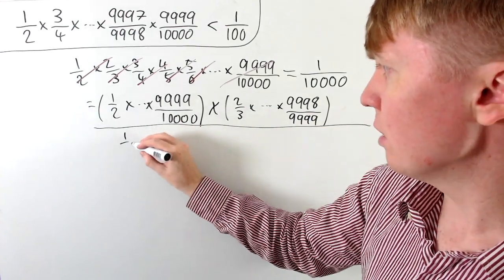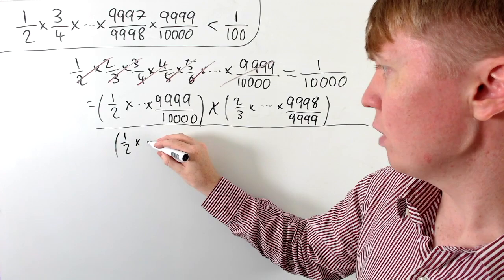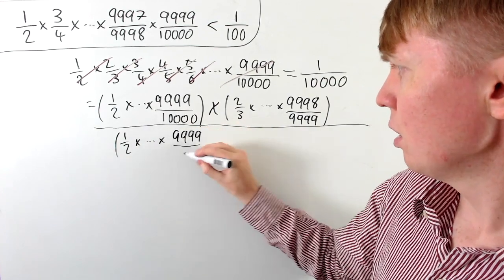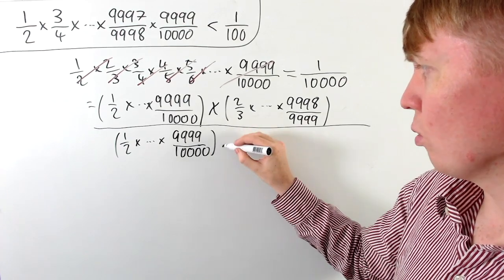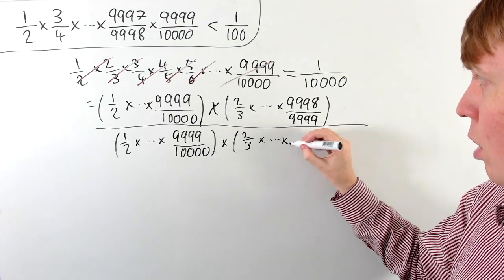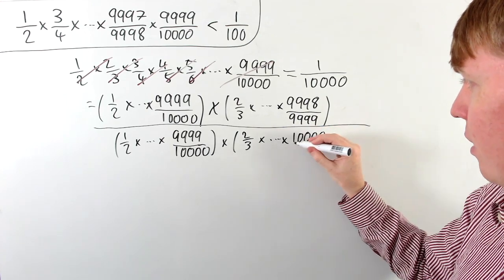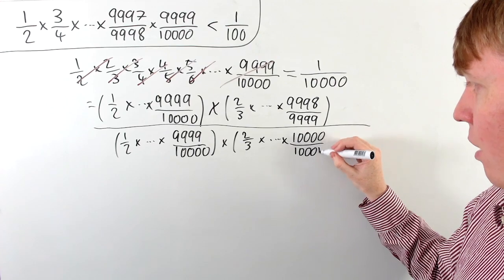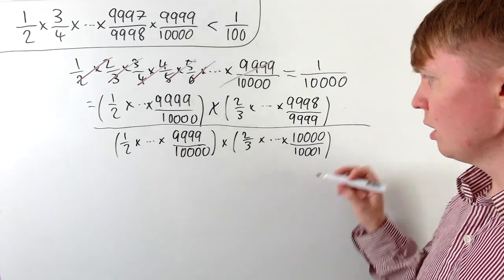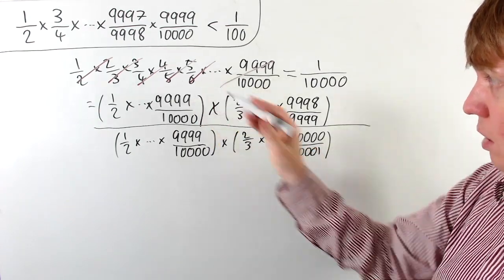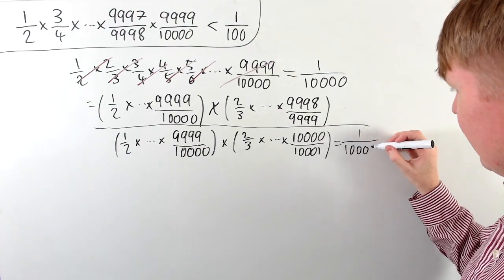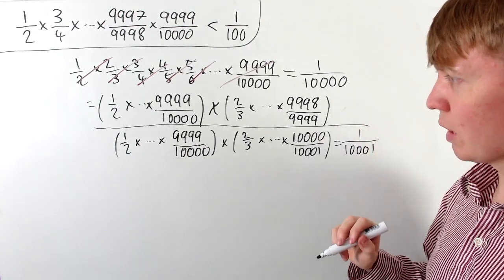If we take our original product — all of the odd over even numbers — and compare it to two thirds times four over five and so on, but now going all the way up to 10,000 over 10,001, we've got the same number of terms in each product. You can see there'd be the same cancellation structure as before, and this would just be equal to one over 10,001 rather than one over 10,000.